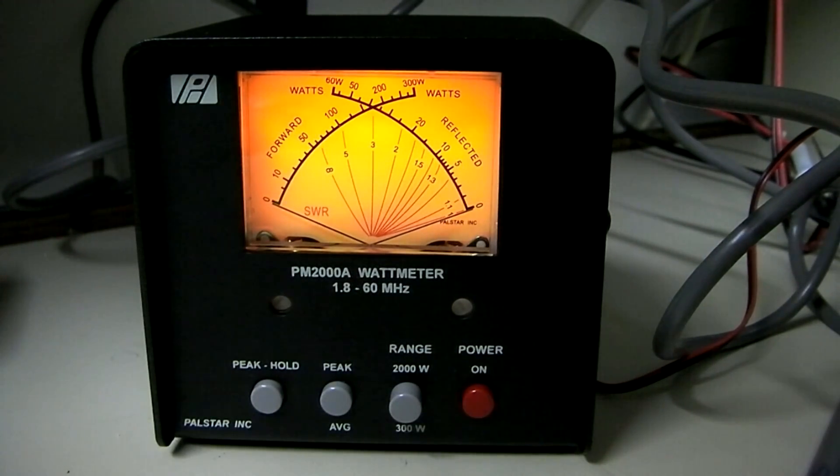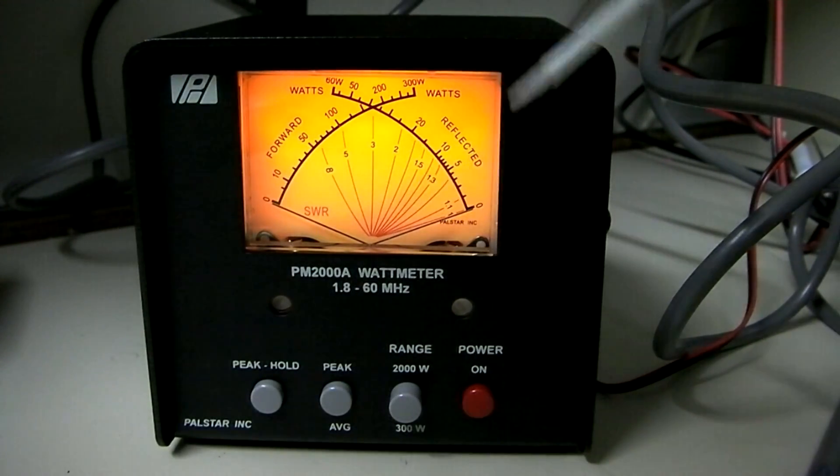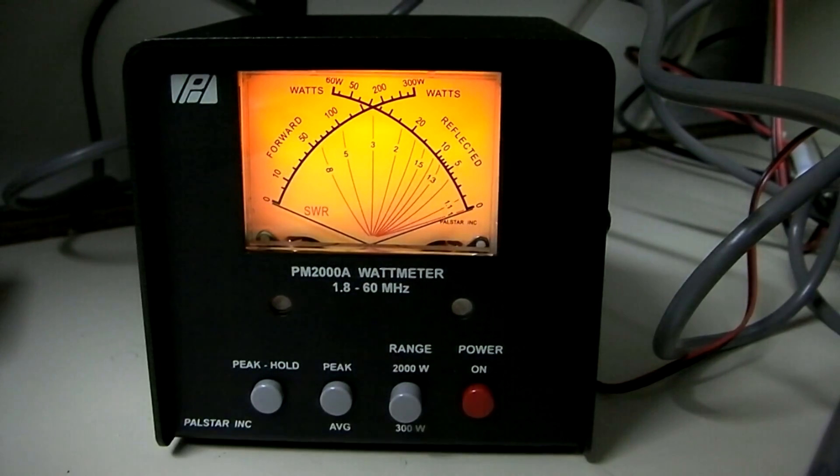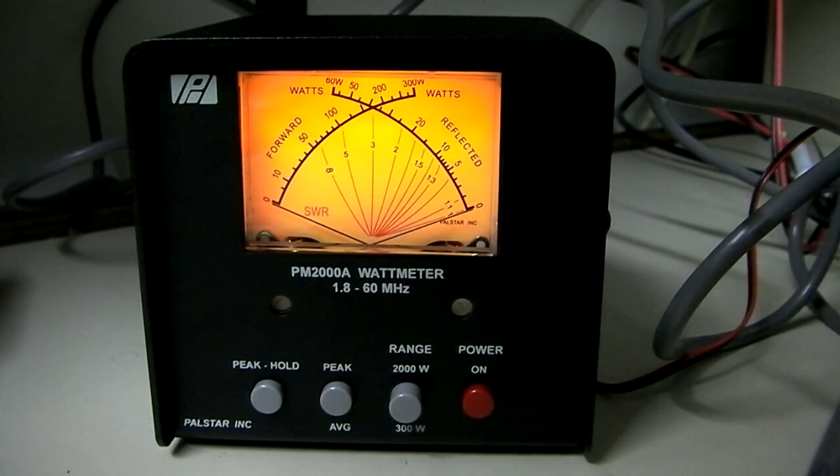My point being that if you are a CB-er and you're looking to spend money on a meter, the Palstar is a good choice. It'll work great for you. There are other options, though, that you can pick up those Radio Shack SWR meters used for under $50.